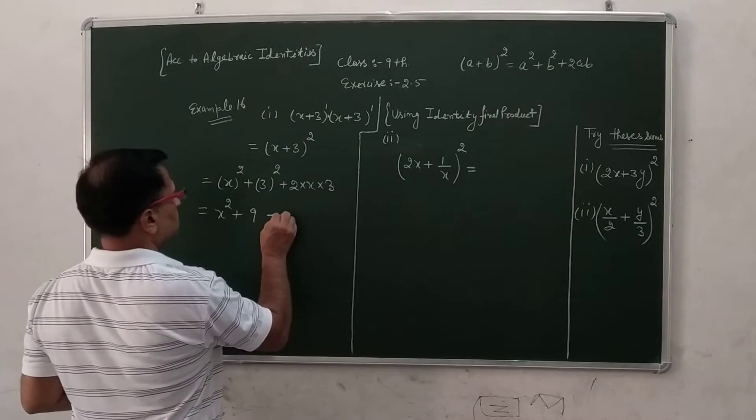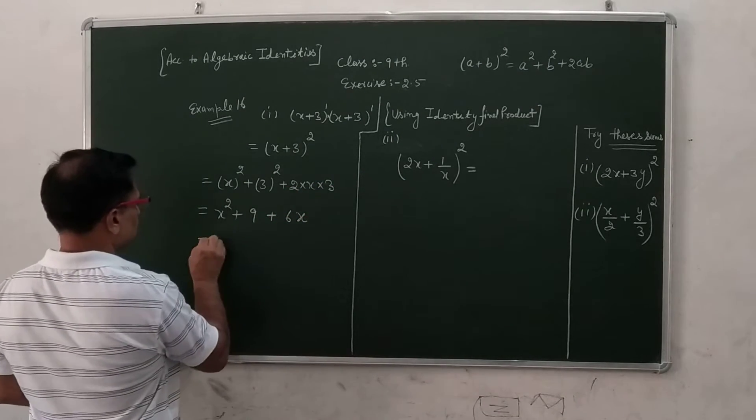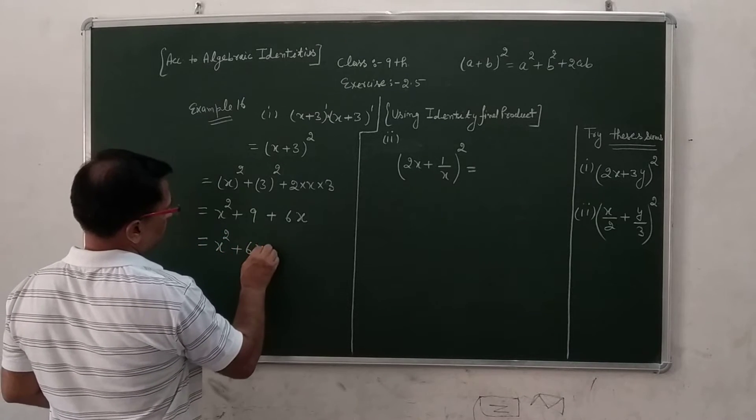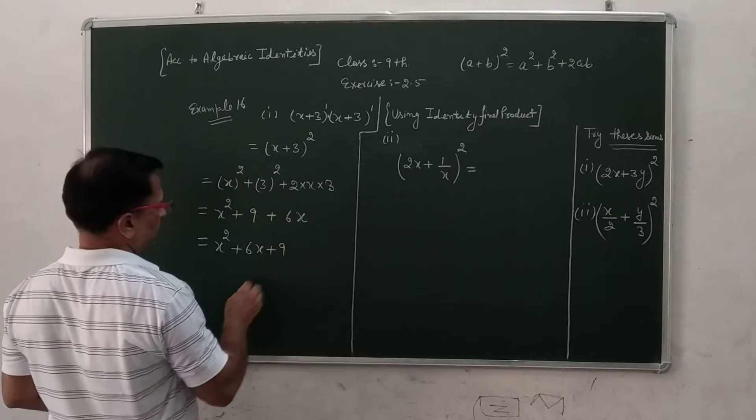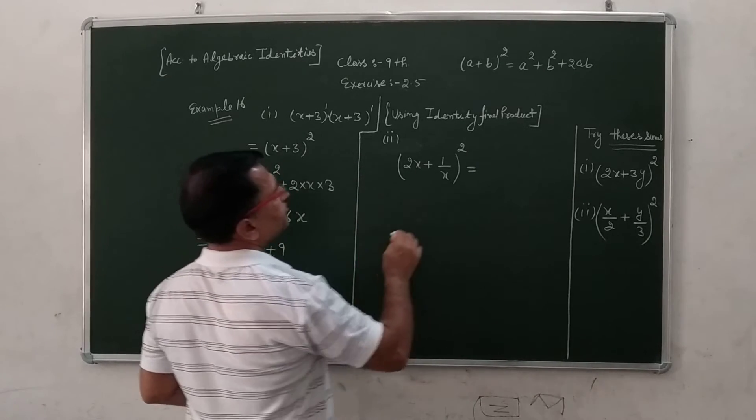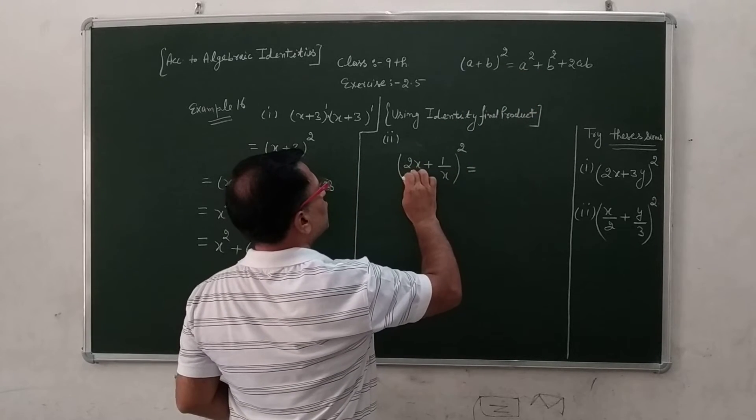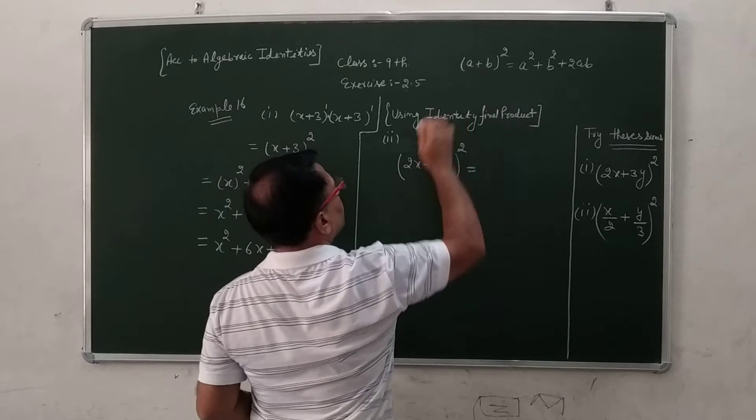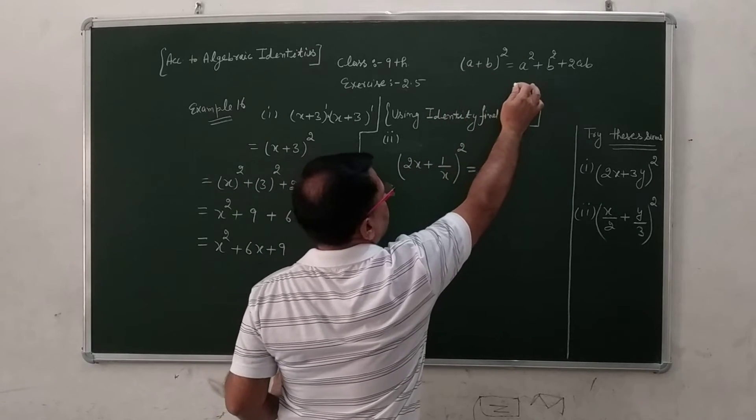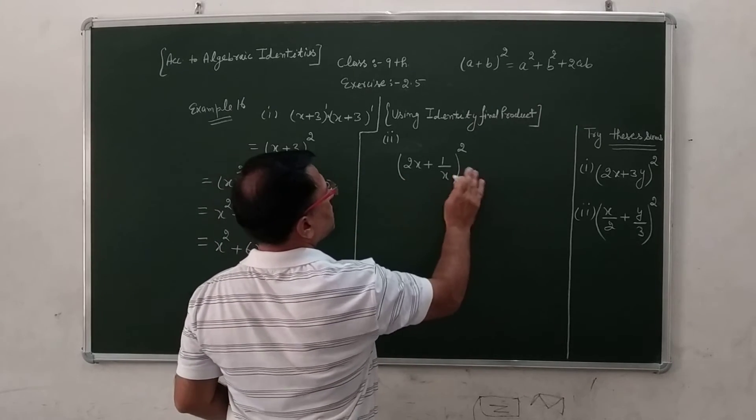So the answer is x squared plus 6x plus 9. This is identity type A. This is a and this is b. 2x is a compare and 1 upon x is b. a square plus b square plus 2ab, this is a type of identity.